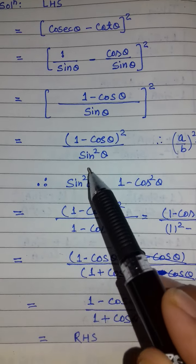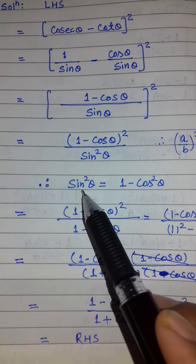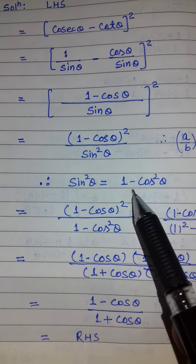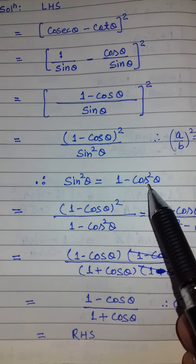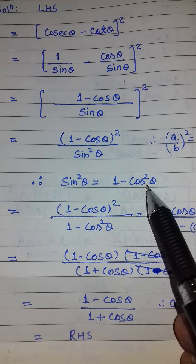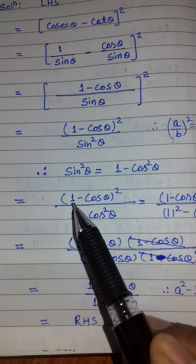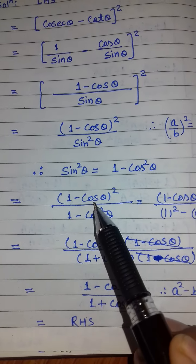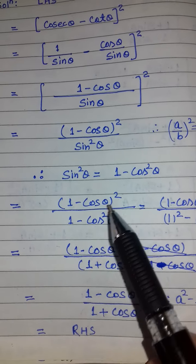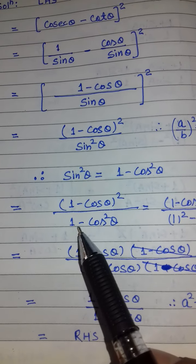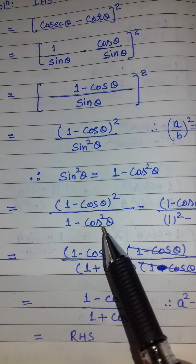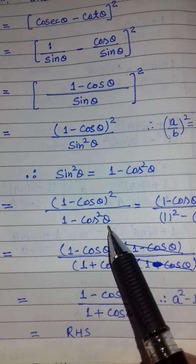यहाँ एक identity use करेंगे: sin² θ की जगह हम 1 − cos² θ लिख सकते हैं। तो यहाँ आएगा: (1 − cos θ)² upon (1 − cos² θ)।